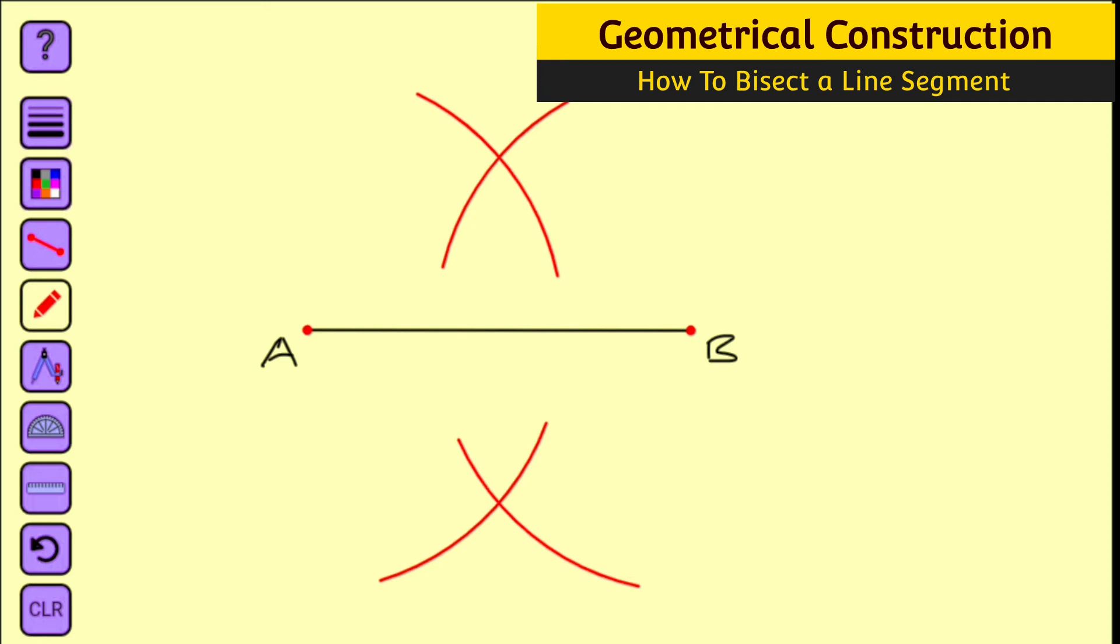Let me name them C and D. These are the two intersections. Next, use your ruler to connect these two intersections C and D together. But since I have a line segment, I'm going to use it.